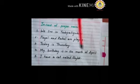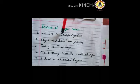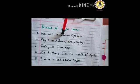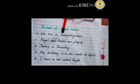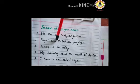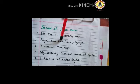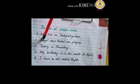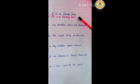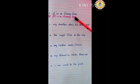The proper noun should start with a capital letter. So here in the first sentence: 'We live in Tadepaligudam.' Tadepaligudam is a specific place, so we wrote T as capital in the middle of the sentence. Second one: 'Payal and Rahul are playing.' Rahul and Payal are particular person names, so we used R capital and P capital. Now this is today's task: punctuate these sentences as shown in the example with suitable punctuation marks.